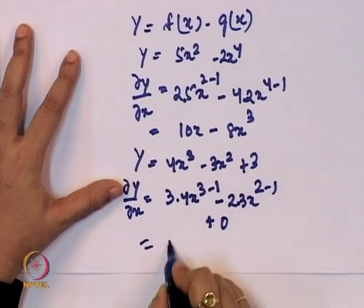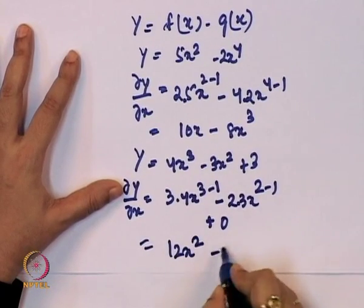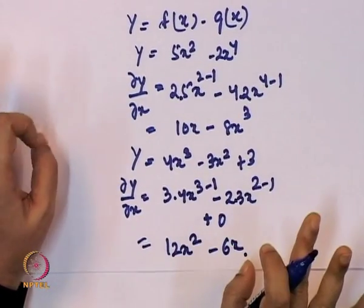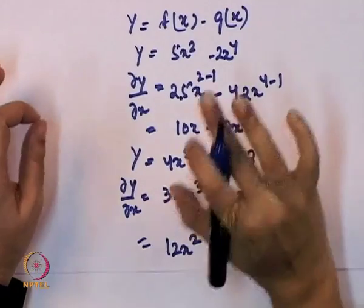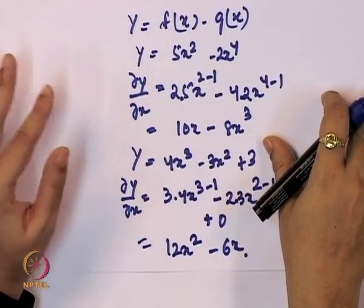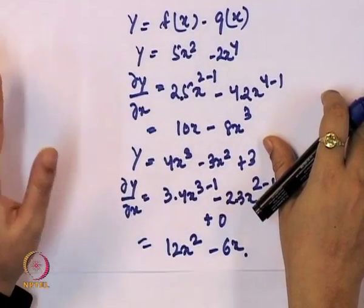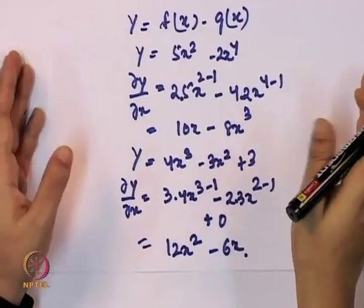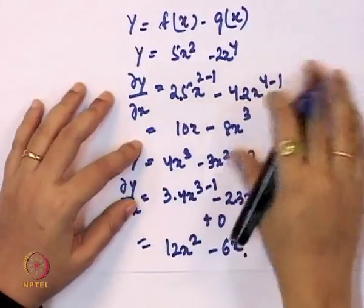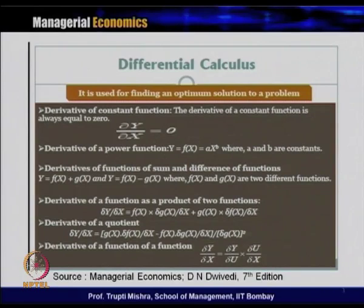In the case of a derivative where the function is a sum or difference, we get the functional form in terms of either a negative value (difference) or a positive value (summation) between two variables. Next, we look at the derivative of a function that is a product of two functions.